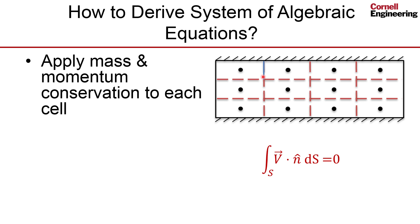I'll assume that the velocity along this segment of the control surface is constant and is equal to the value at the midpoint.